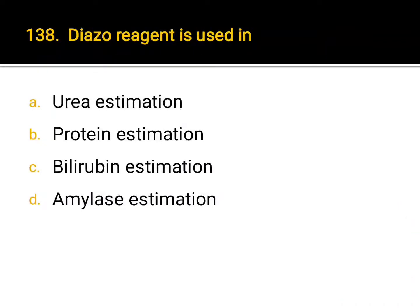Diazo reagent is used in: A. urea estimation, B. protein estimation, C. bilirubin estimation, D. amylase estimation. Correct answer: C. Bilirubin estimation.